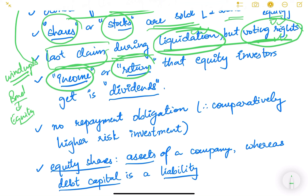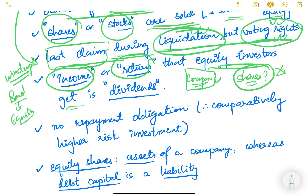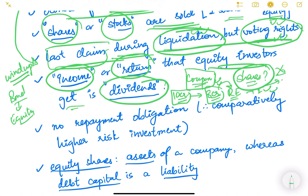What returns do equity investors get? In bonds we get coupons, but in equity the primary regular return is dividends. For example, if the Amazon company is making a profit of 10 crore per annum, it might retain 8 crore — known as retained earnings — and distribute the remaining 2 crore to its shareholders as dividends. However, dividends are not compulsory; not all companies pay them.